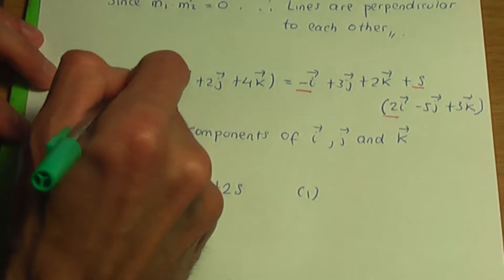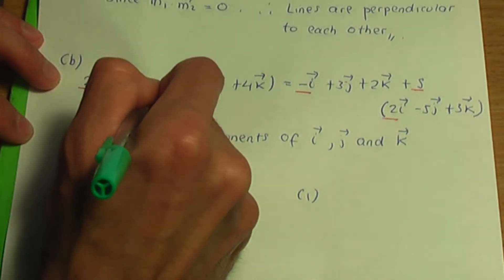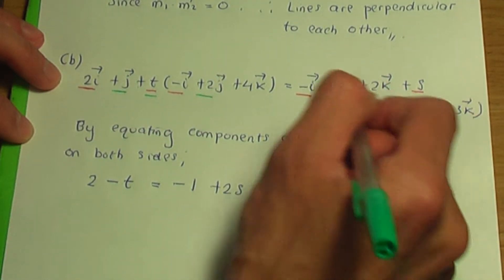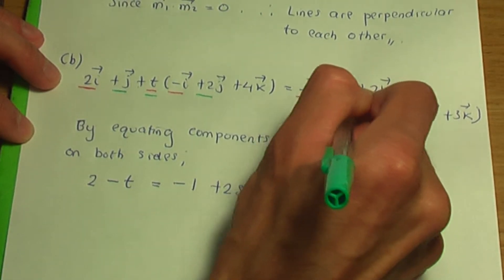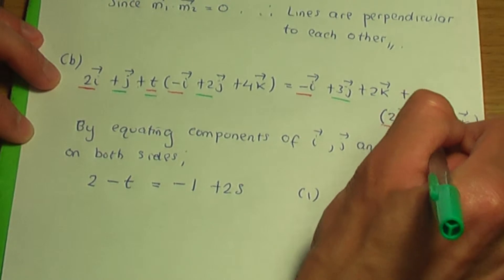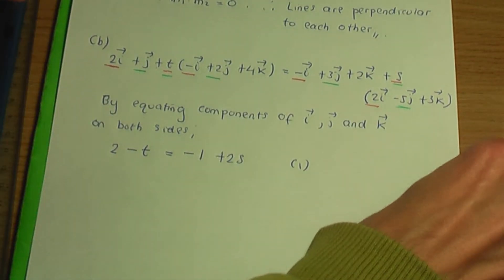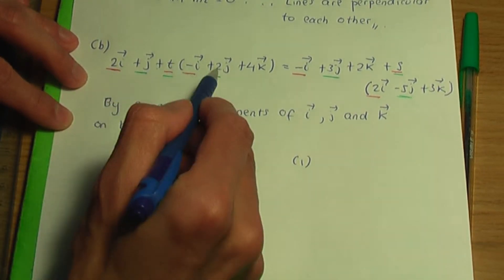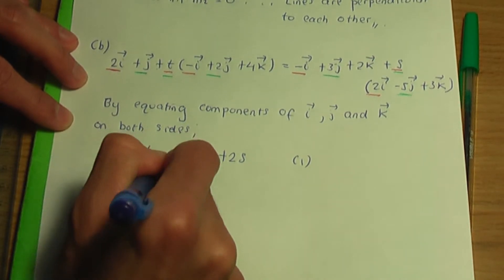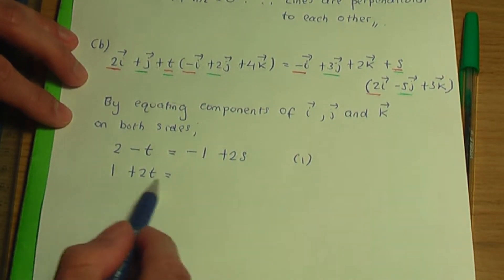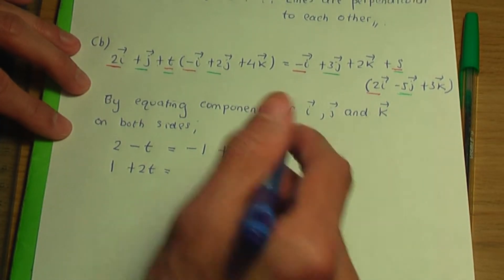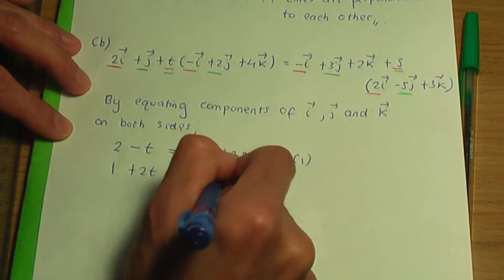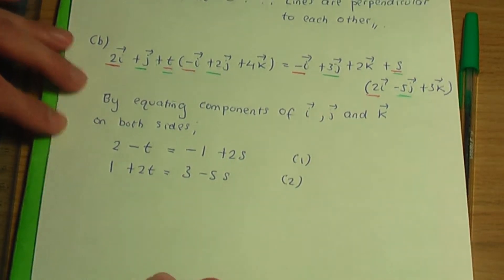Now for the j components: on the left I have 1 + t(2), which is 1 + 2t. On the right I have 3 + s(-5), which is 3 - 5s. So equating j components: 1 + 2t = 3 - 5s. Let's name that equation number 2.